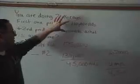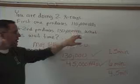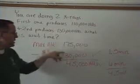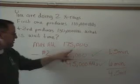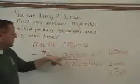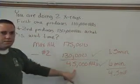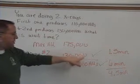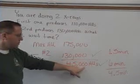If these two added together are more than the maximum, you can take the first x-ray but then you need to wait to take the second one. The way you figure that out is you take the maximum heat units — 175,000 — minus x-ray number two, which was 130,000. That gives you 45,000 heat units. Then you look up x-ray number two and also this result on the chart on page 81.